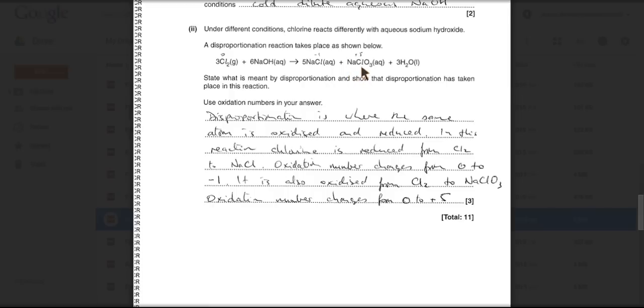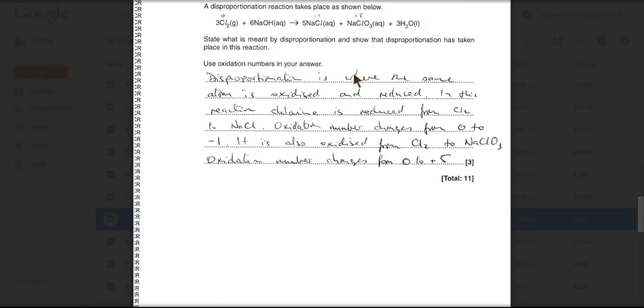If they asked you for the name of that, it would be called sodium chlorate five. So there's my answer. Disproportionation's where the same atom is oxidized and reduced. In this reaction, chlorine is reduced from Cl2 to NaCl. And you must always give the oxidation number change. So it's going from zero to minus one in that case. It's also oxidized from Cl2 to NaClO3. Oxidation number changes from zero to plus five.